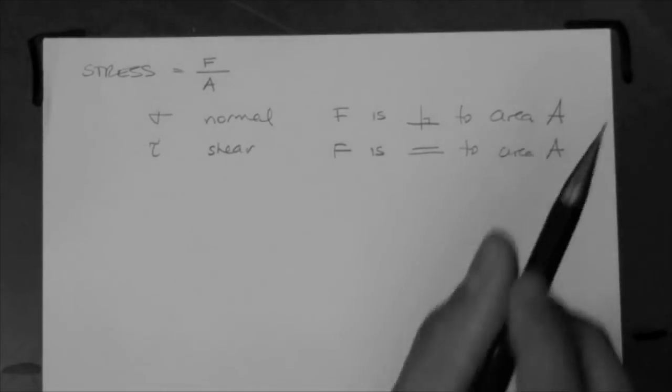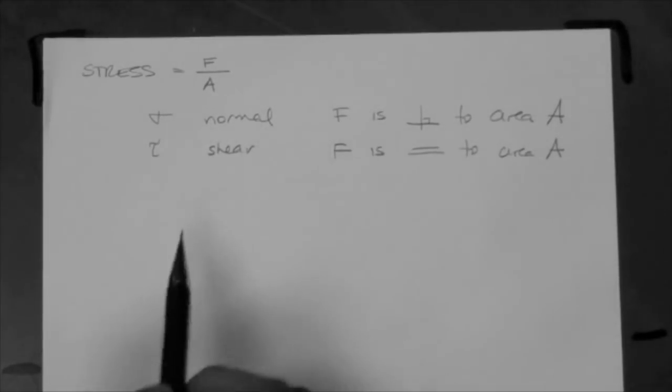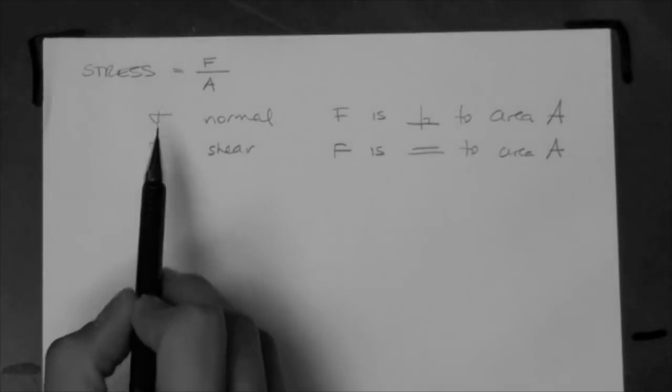So, there are two types of stresses, the normal stress and the shear stress, denoted by sigma and tau.